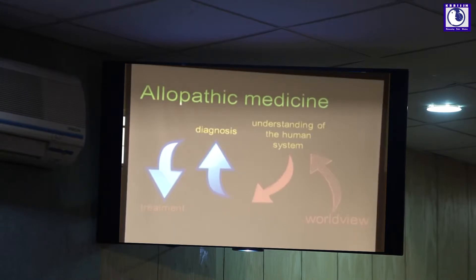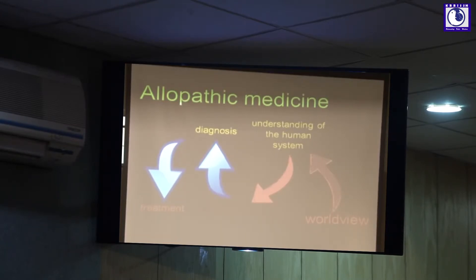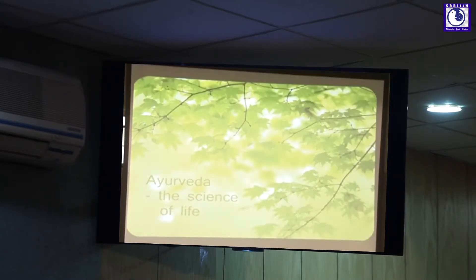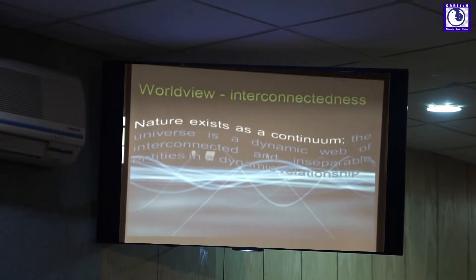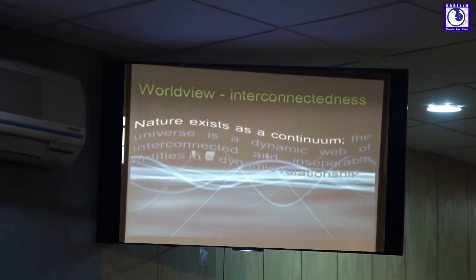The functional classification based on dosha runs as an undercurrent to the entire Ayurvedic understanding of health and disease — not only in understanding but also in how Ayurveda handles health and disease. A function is an emergent property arising from structures, biochemistry, and various other activities. Ayurveda has identified three major functions in the body: movement, metabolism, and growth. In the context of Ayurveda, these are called Vata, Pitta, and Kapha.